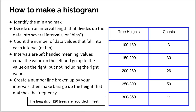You could do more bins or less — typically you want to do less than five. Then what you're going to do is look at your data and count the number of values that fall into each interval. You go through all 120 trees and count how many have a height from 100 to 150 — say I counted three. Then how many from 150 to 200 — and I counted 30, and so forth.